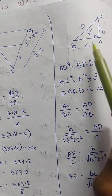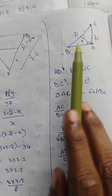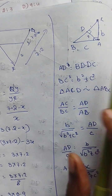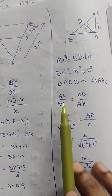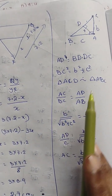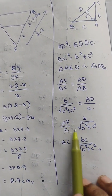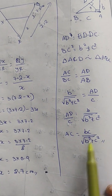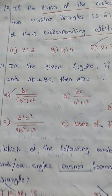BC² = b² + c². Triangle ACD and triangle ABD are similar triangles. So AC/BC = AD/AB. Here AC = b, BC = √(b² + c²), and AD/AB gives AD/c = b/√(b² + c²). Therefore AD = bc/√(b² + c²), and option A is the correct answer.